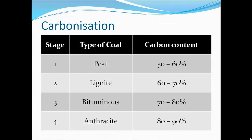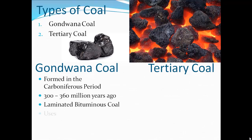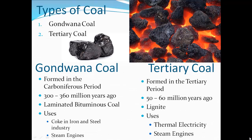Coal is classified on the basis of carbon content — a process called carbonation, primarily studied in geochemistry. The longer the dead remains of plants are buried, the better the quality of coal. Stage 1: peat coal — 50 to 60% carbon content. Higher quality: lignite — 60 to 70% carbon. Next: bituminous — 70 to 80% carbon. Best quality: anthracite — 80 to 90% carbon. In India, coal is also classified by geological occurrence into two categories: Gondwana coal (ancient coal, formed during the Carboniferous period, 300–360 million years old, laminated bituminous coal, used in the iron and steel industry as coking coal and in steam engines) and tertiary coal (recent coal, formed 50–60 million years ago, best example is lignite, used in thermal power plants and steam engines).